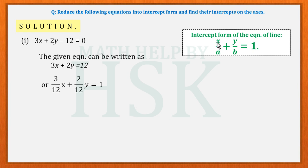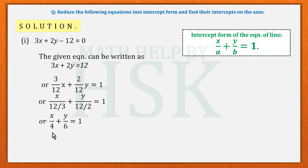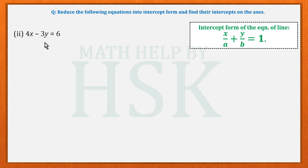Observing this equation, x and y are in the numerator and the constant terms are in the denominator. Rewriting, we get x/(12/3) + y/(12/2) = 1, which simplifies to x/4 + y/6 = 1. Comparing with the intercept form, a = 4 and b = 6, so the x-intercept is 4 and the y-intercept is 6.